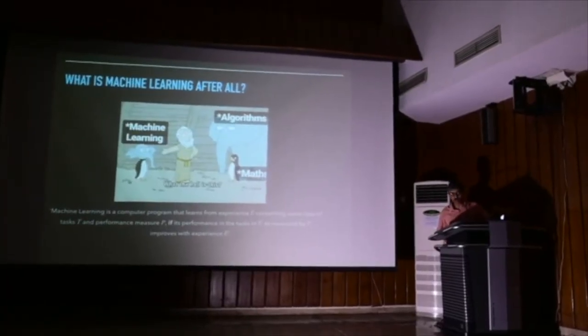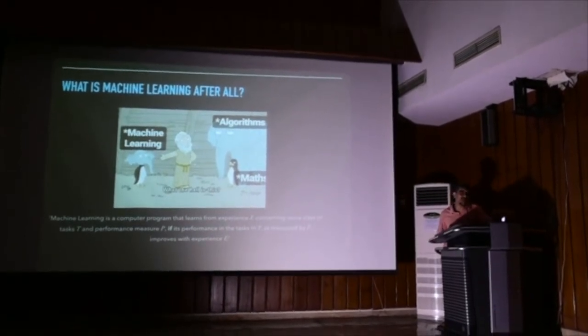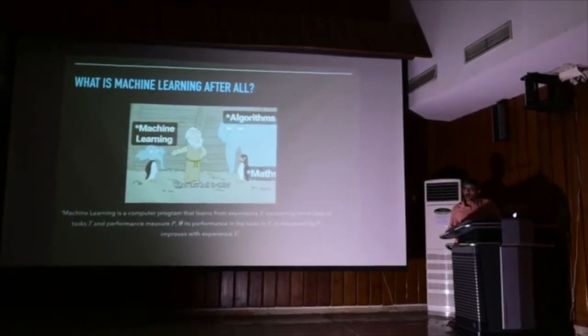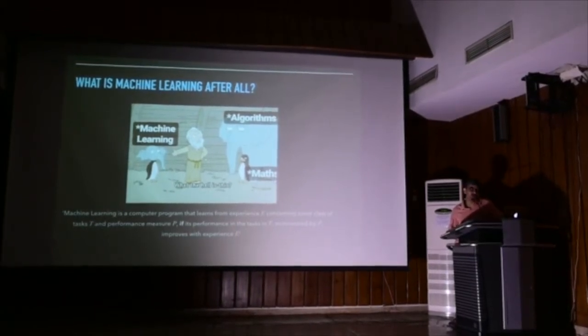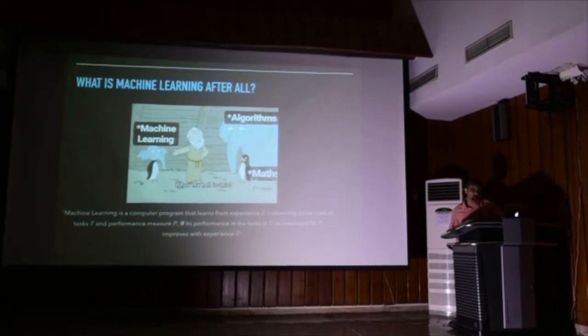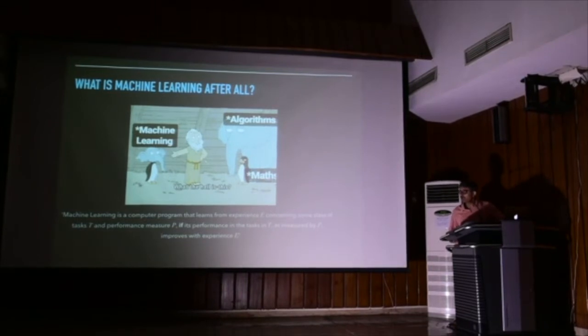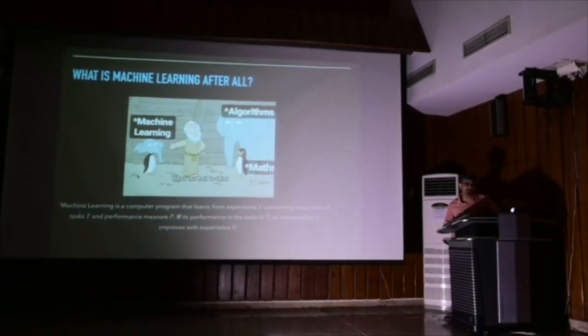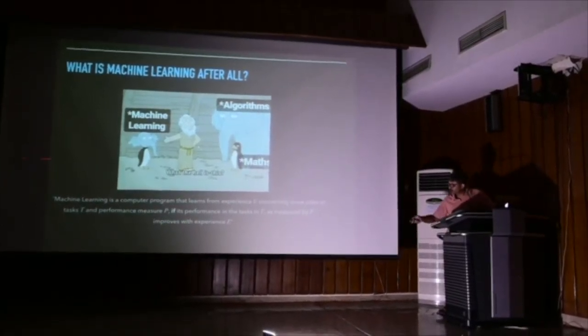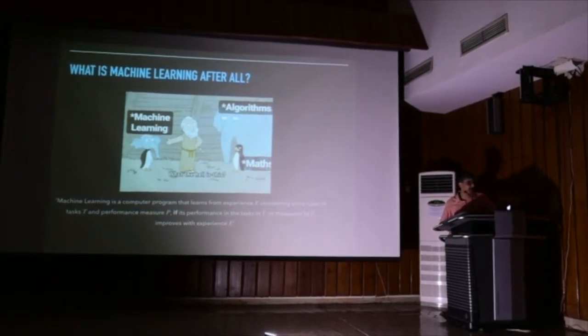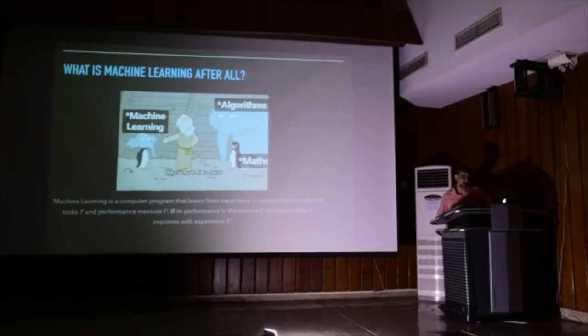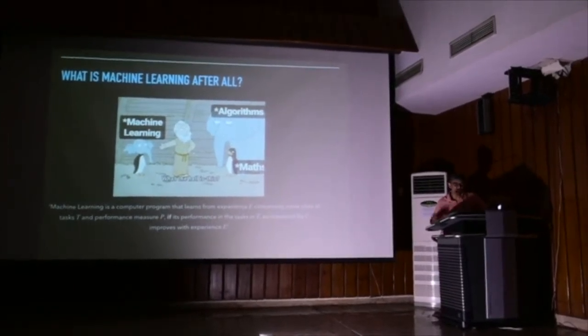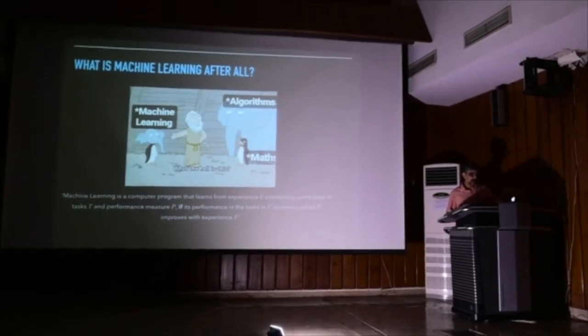It's a computer program that learns from experience. What is experience? It can be different things in different contexts. But let's say you feed some data. So that's the experience. You encounter more data. That's gaining more experience. Concerning some class of tasks, T. So it's trained to perform a certain task or a certain class of tasks. And performance measure P. So when it learns a task, you test how well it has learned. So there is some performance measure which is called P. Now, given this scenario, you call that program a machine learning program if its performance in the task T, as measured by P, improves with experience. So if you feed in more data, if you train it more, its performance improves.